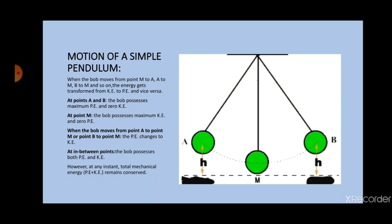When the bob is displaced a little bit on one side, say A, and released, the bob is set into oscillations or to-and-fro motion. As the oscillation takes place, there is a continuous change of energy. When the bob is at point A, it possesses maximum potential energy and zero kinetic energy. As the bob starts moving from point A to point M, the potential energy changes to kinetic energy. When the bob is at point M, it has maximum kinetic energy and zero potential energy, because the whole of the potential energy is now converted to kinetic energy.